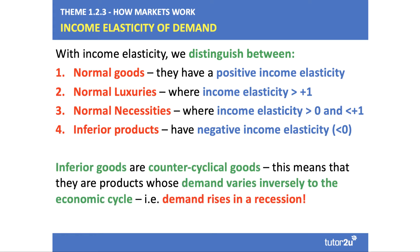Inferior goods are sometimes called counter-cyclical products, which means they're goods and services whose demand varies inversely to the economic cycle. Typically, if you're producing or selling an inferior good, when real incomes are heading lower in a recession, your sales may go up.